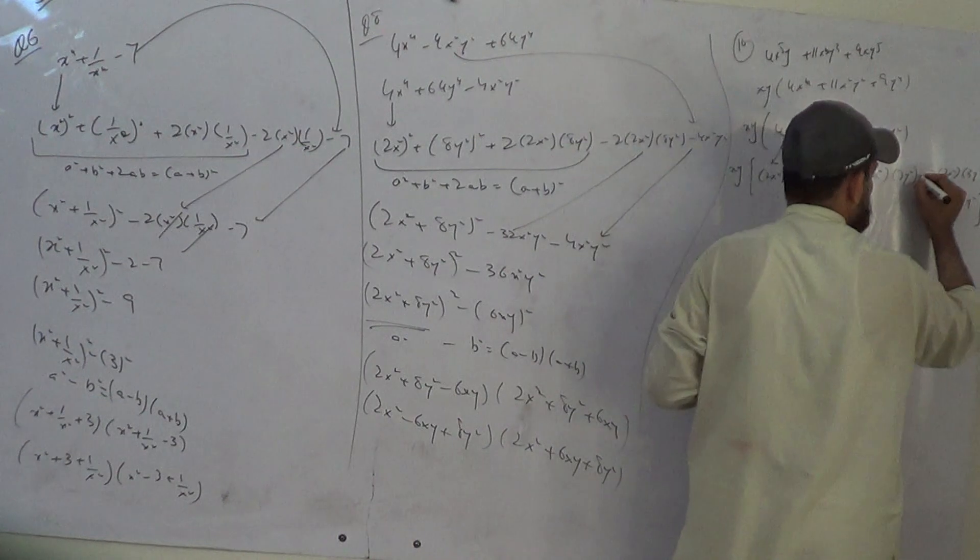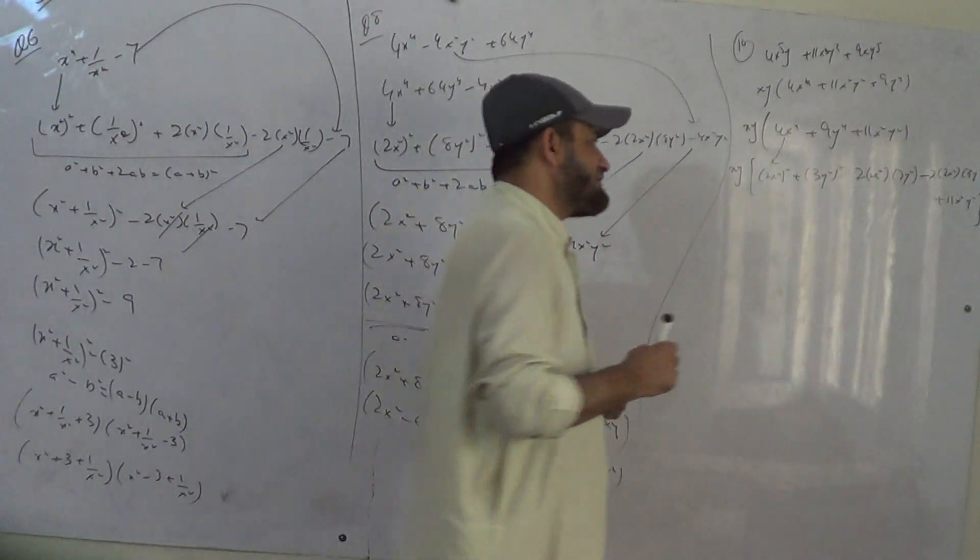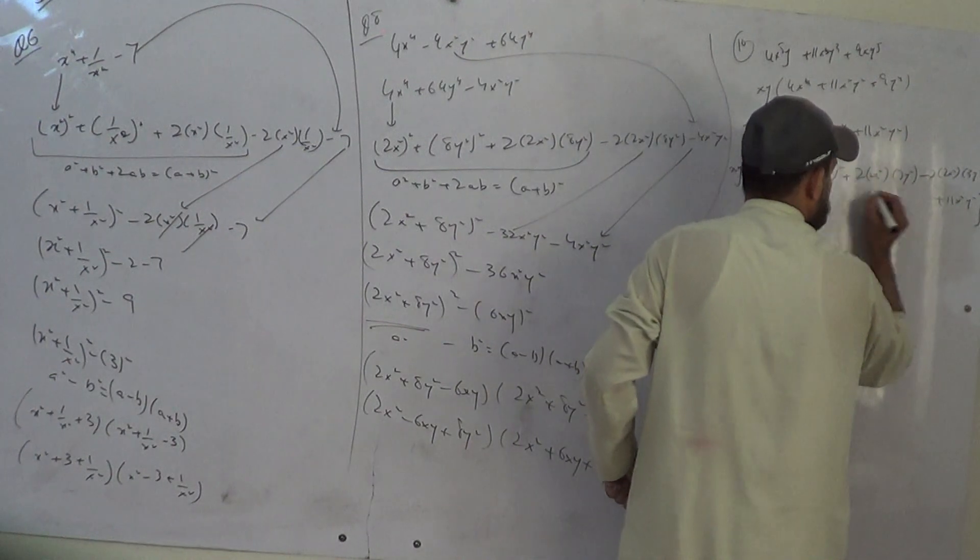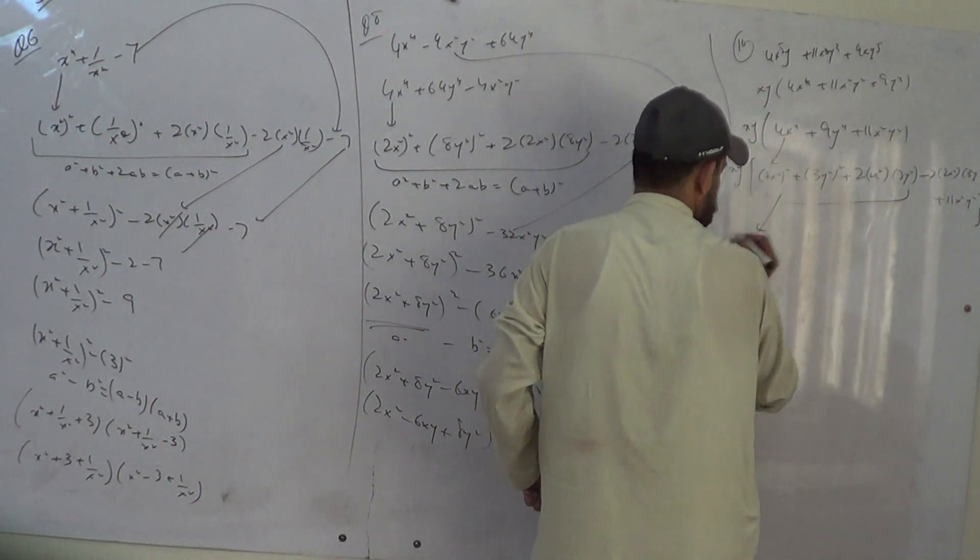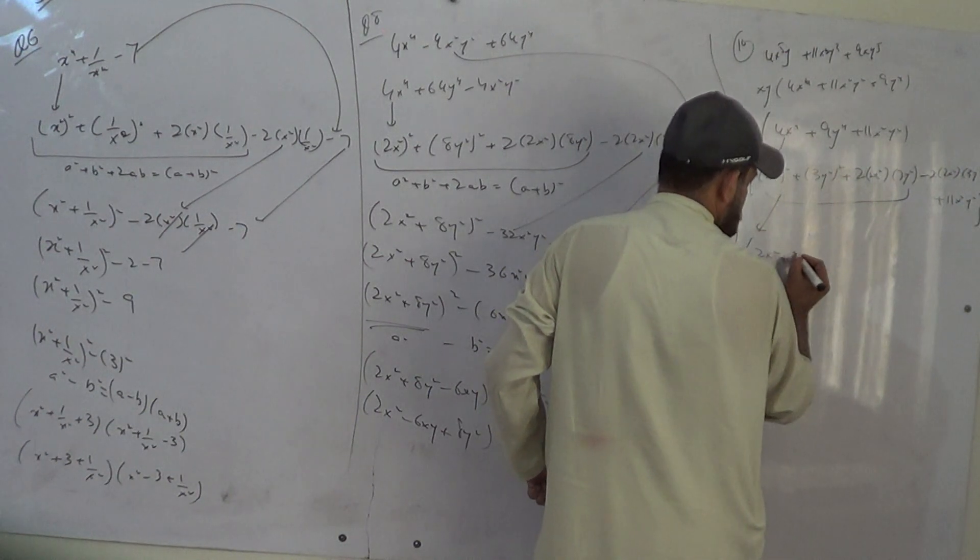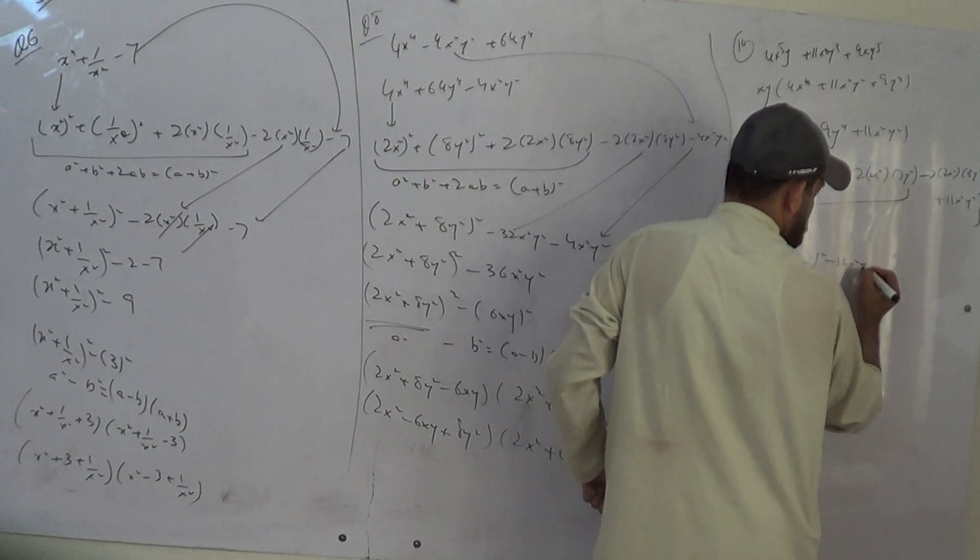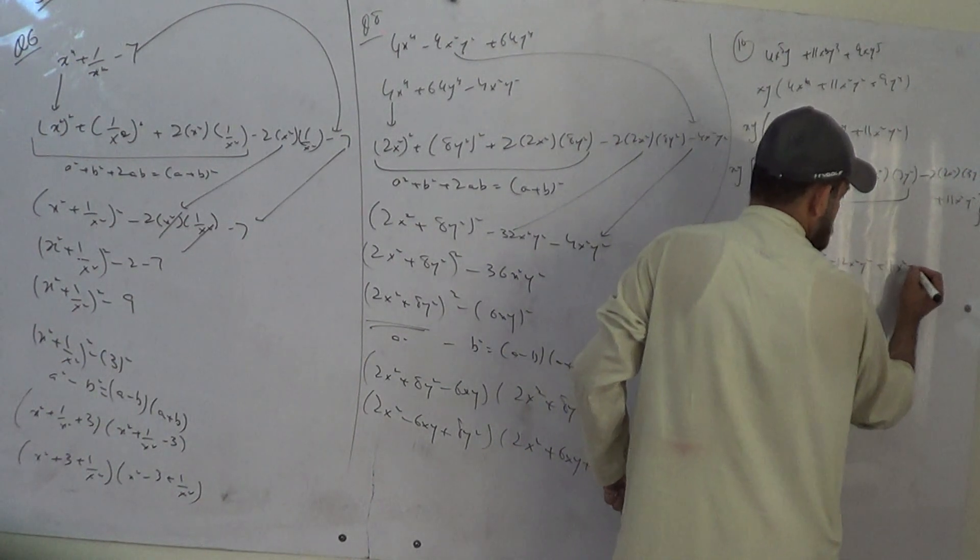If I write minus. Minus 12 plus 11 is minus 1. 1 is a perfect square. Then I write minus and plus here. It will be formula a minus b whole square.